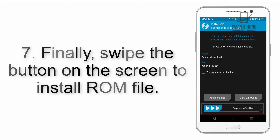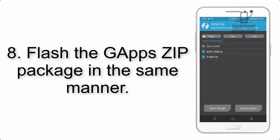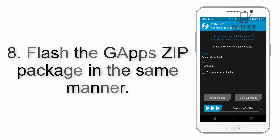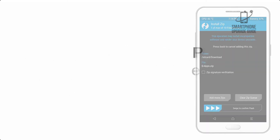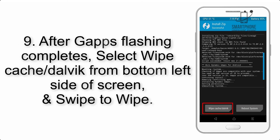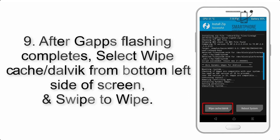Step 7: Swipe the button on the screen to install the ROM file. Step 8: Flash the GApps zip package in the same manner. Step 9: After GApps flashing completes, select Wipe Cache and Dalvik from the bottom left side of the screen and swipe to wipe.